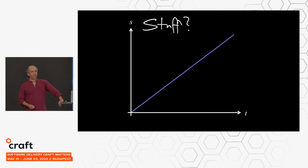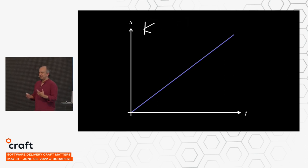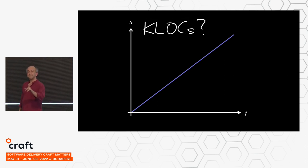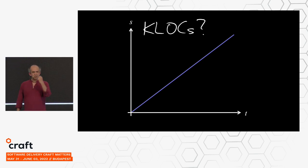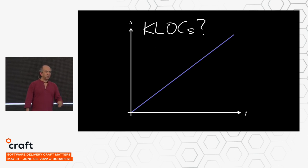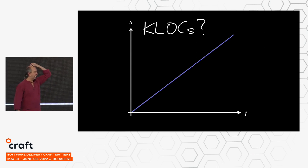Maybe S stands for 'stuff' — how much stuff? Maybe it's thousands of lines of code, but that's easy to game. Lines of code as a metric isn't wrong — it is the most faithful measure of the number of lines of code you have. If you ask 'how many lines of code do you have?' there is only one satisfactory answer. It's not very useful a lot of the time, but it's a good measure of what it measures.